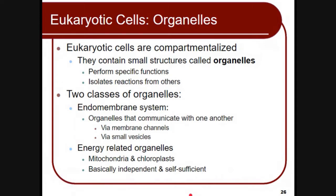Organelles perform a specific function and isolate reactions from others, meaning they can independently work to perform a certain function. There are two classes of organelles: the endomembrane system, which contains organelles that communicate with each other via membrane channels or small vesicles, and energy-related organelles such as mitochondria and chloroplasts, which are basically independent and self-sufficient.